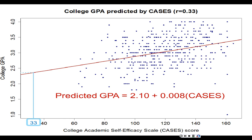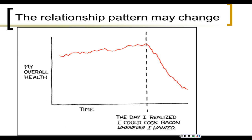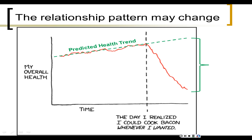The dangers of extrapolation are that you could apply a model and, outside your data, the model could change — the influences affecting your results change but the model doesn't recognize that. There's an XKCD comic about this: a man's health is increasing over time until he discovers he can cook bacon whenever he wants. If he had predicted his health trend before discovering bacon, he would have forecast excellent health at age 50 — but there's a big difference between what he would have predicted and what actually happened because of bacon.